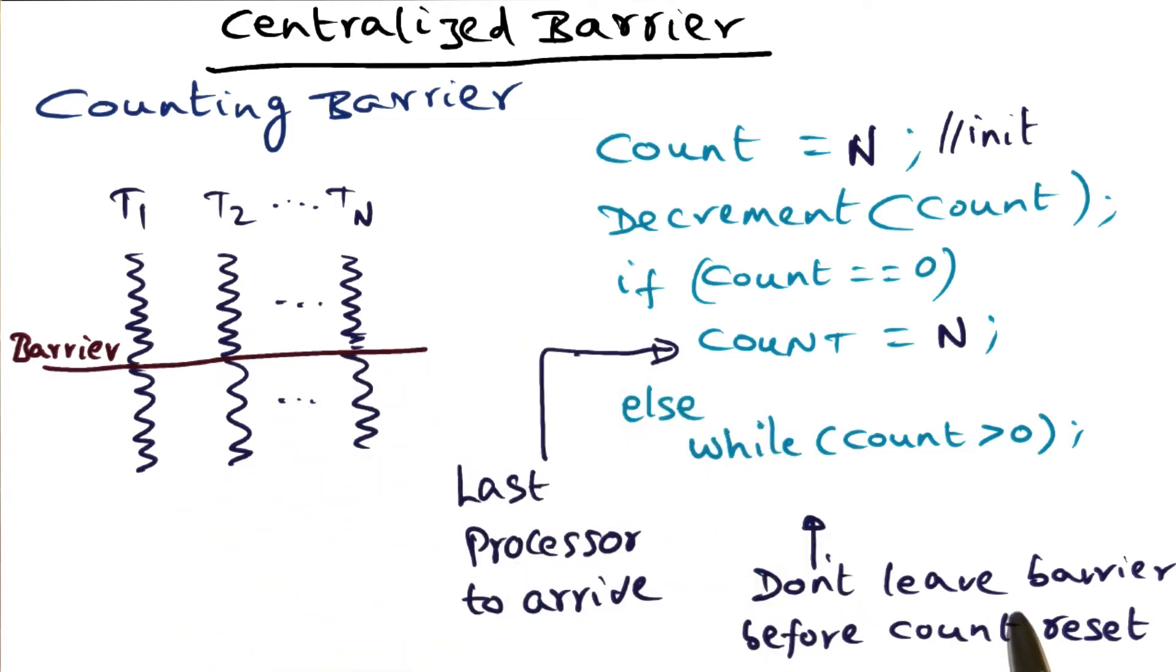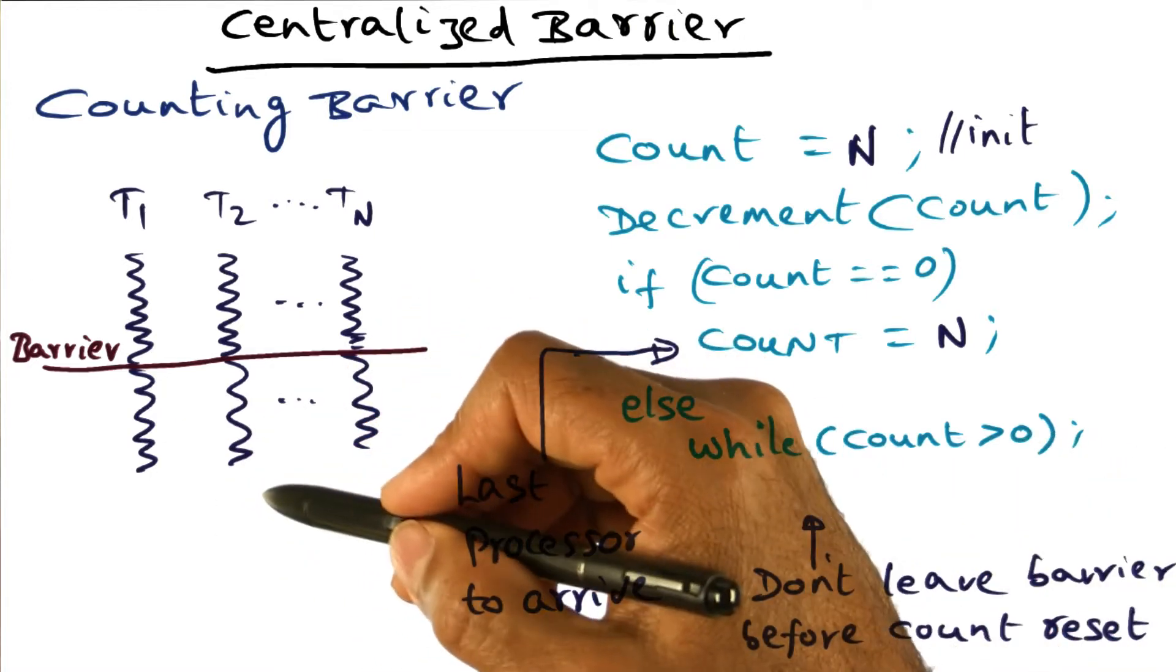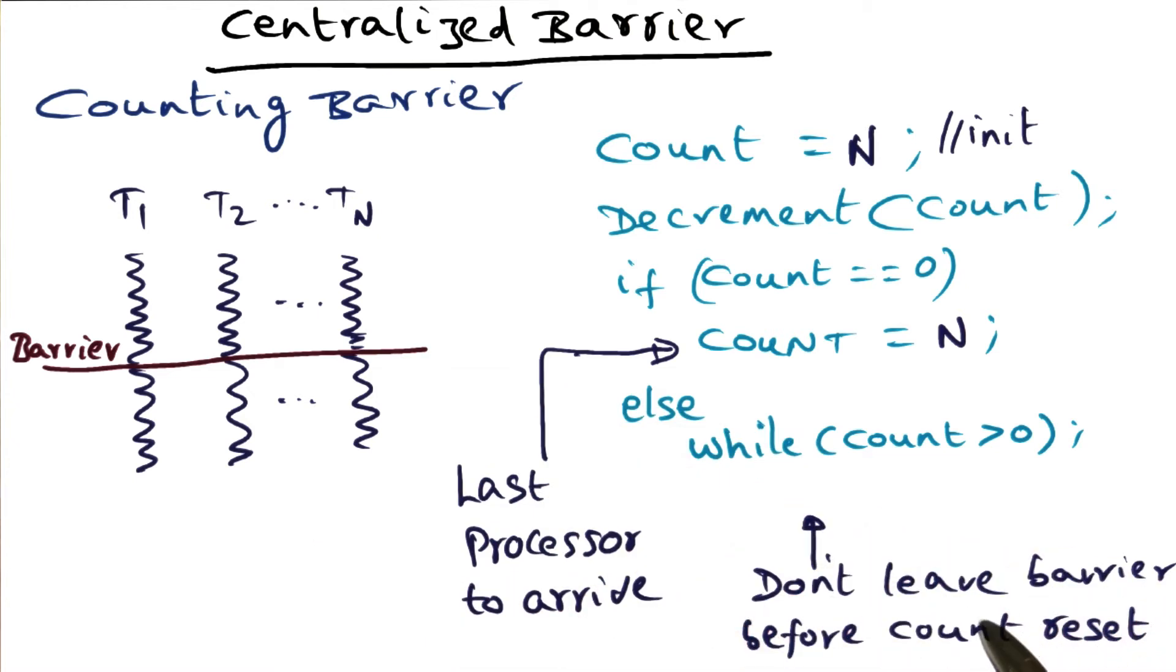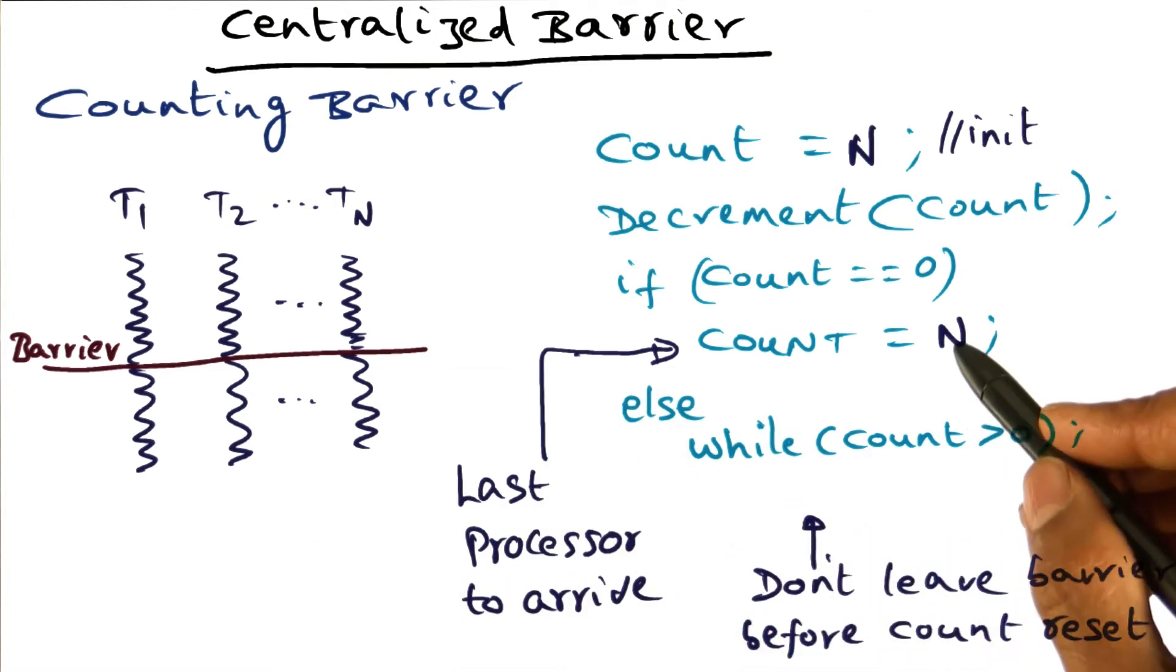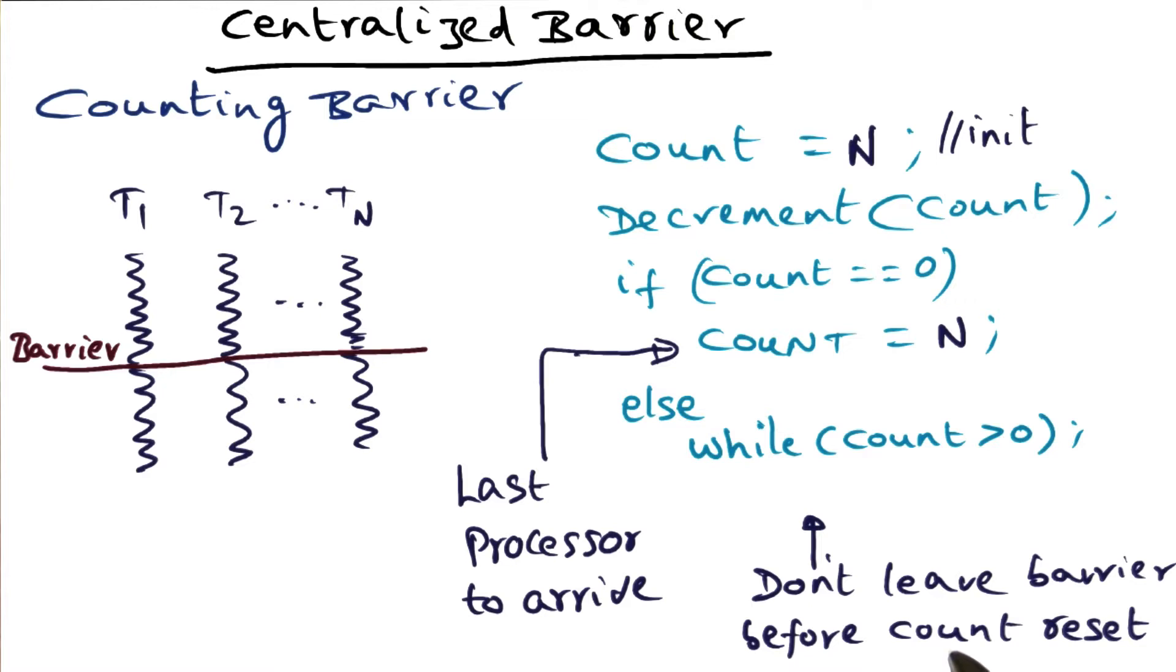The key thing to do to overcome this problem is to make sure that the threads that are waiting here don't leave the barrier before the count has been reset to n. They're all waiting here for the count to become zero, and once the count has become zero, they're ready to go, but we don't want to let them go yet. We want to let them go only after the count has been reset to n.